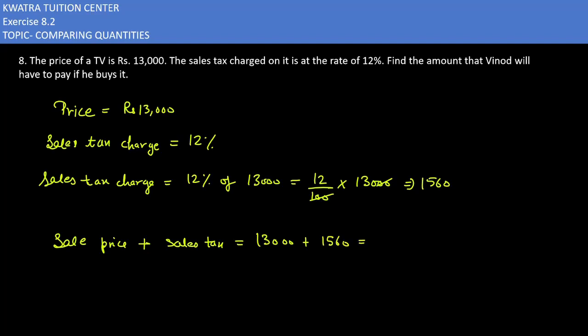So, adding both of them will give you 14,560. The amount that Vinod will have to pay if he buys it is 14,560.